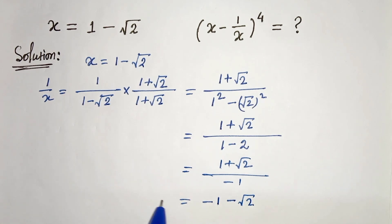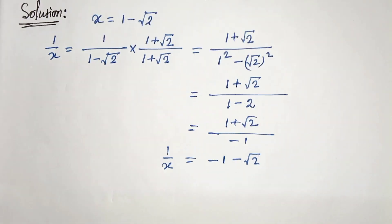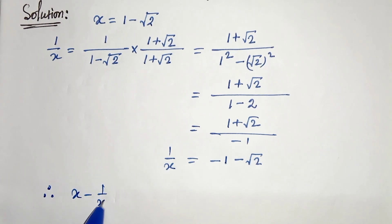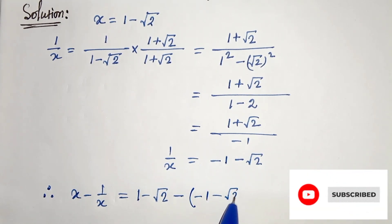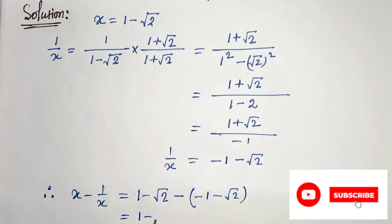Therefore, x minus 1 by x will be x is our 1 minus root 2, and minus of 1 by x minus 1 minus root 2, that is 1 minus root 2 minus minus plus 1 minus minus plus root 2.